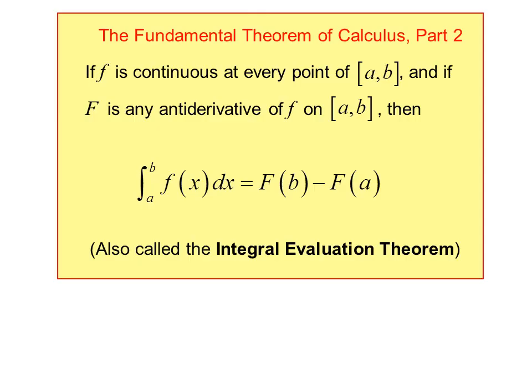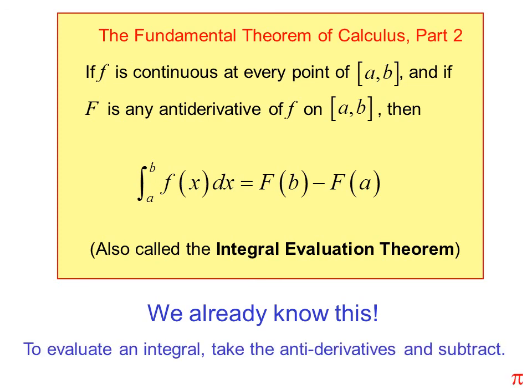The Fundamental Theorem of Calculus, Part 2: If f is continuous at every point of closed interval [a,b], and if F is any antiderivative of f on [a,b], then the integral from a to b of f(x) dx equals F(b) minus F(a) — that is, the antiderivative at b minus the antiderivative at a. This is also called the integral evaluation theorem. We already know this — this is what we've been doing. To evaluate an integral, take the antiderivative and subtract.